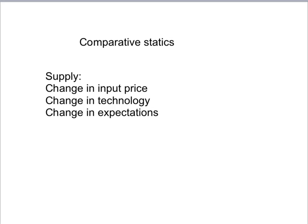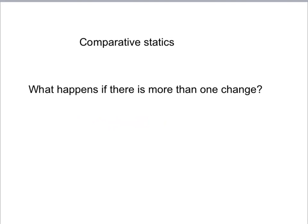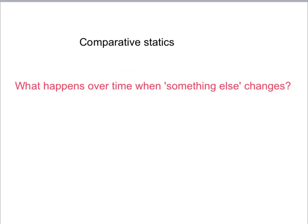And similarly, on the supply side, we've looked at an increase in input prices. But what happens if there's a decrease in an input price? What happens if there's a change in technology or what happens if there's a change in expectations? We can also ask what happens if there's more than one change at a time? What happens if the price of a substitute goes up and that affects the demand side, but at the same time there's a change in technology that affects the supply side? And we can look at what happens over time when something else changes.